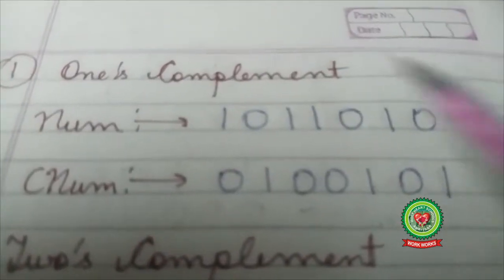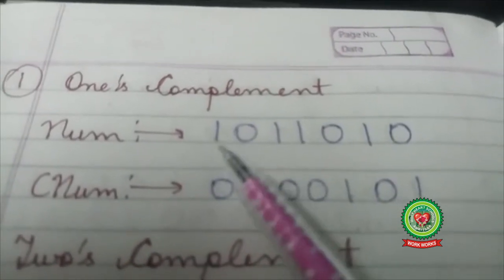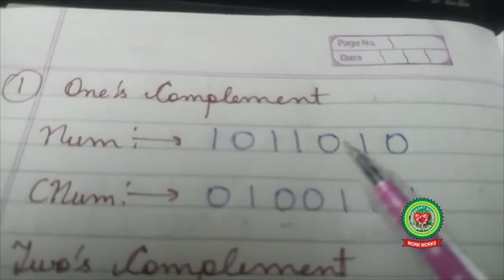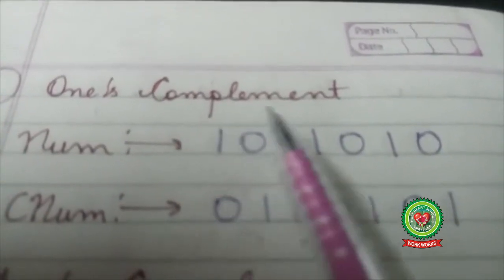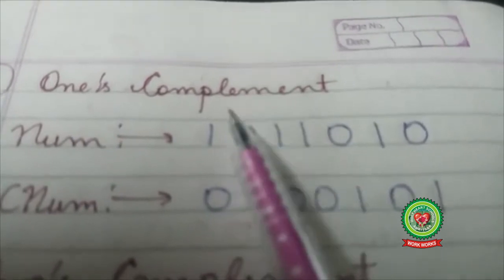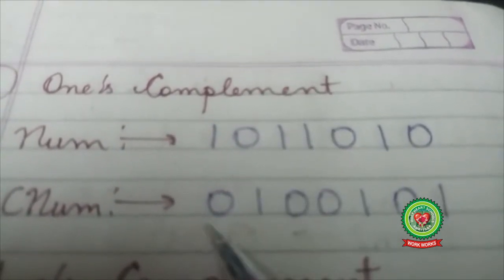Now let's understand one's complement. Suppose our number is 1011010. I have to find one's complement. Students, one's complement means you are going to invert the digits. It means 1 becomes 0 and 0 will become 1.